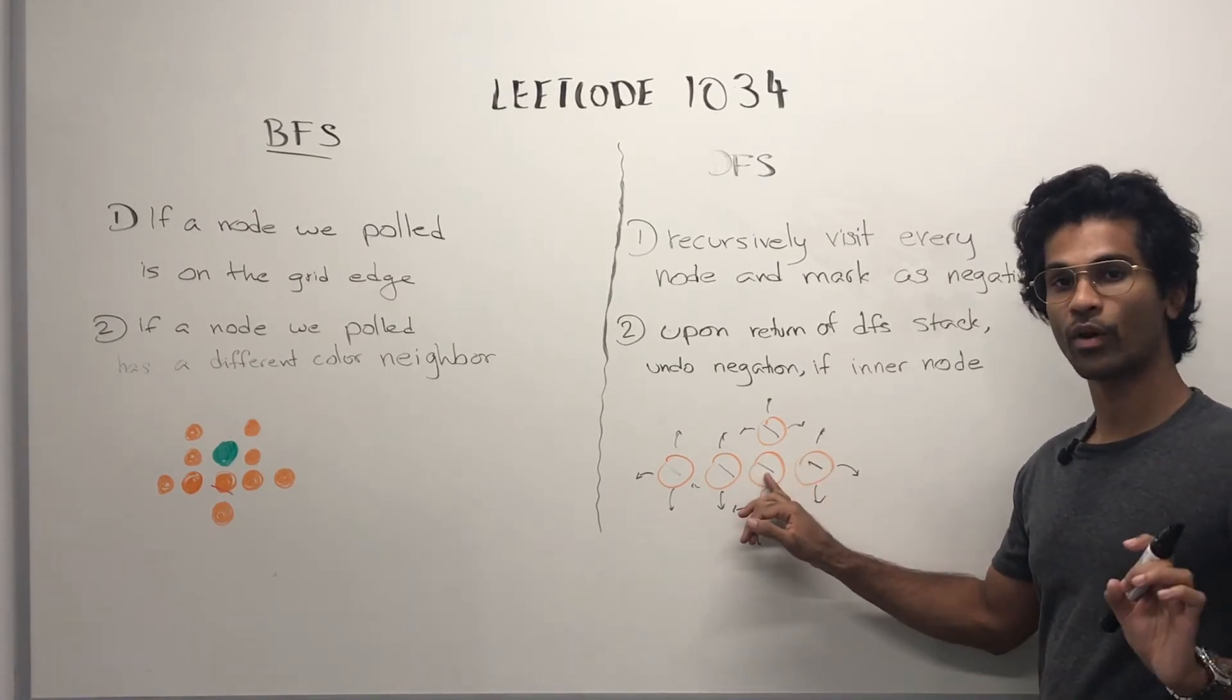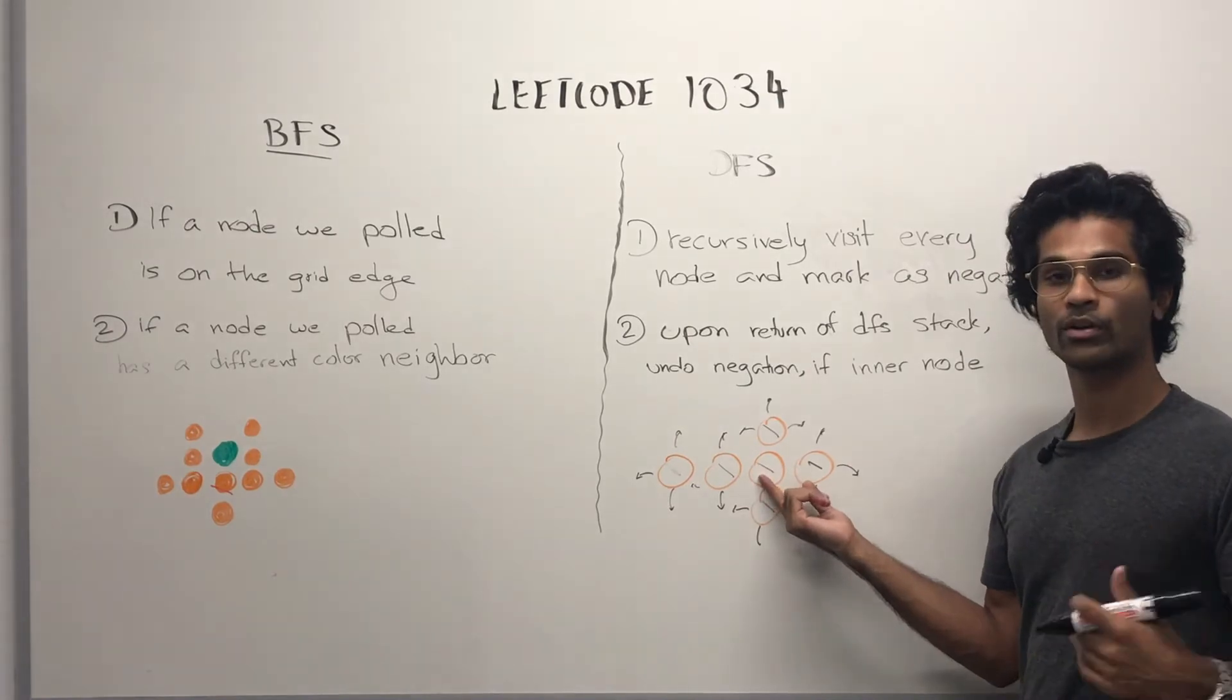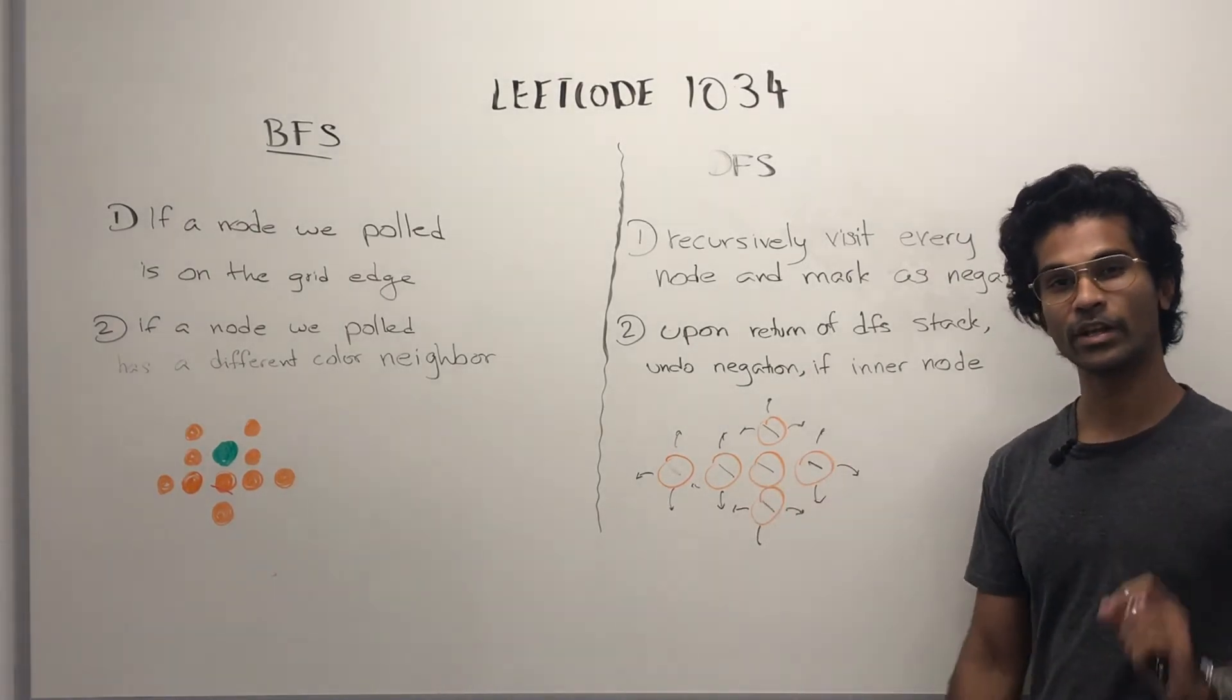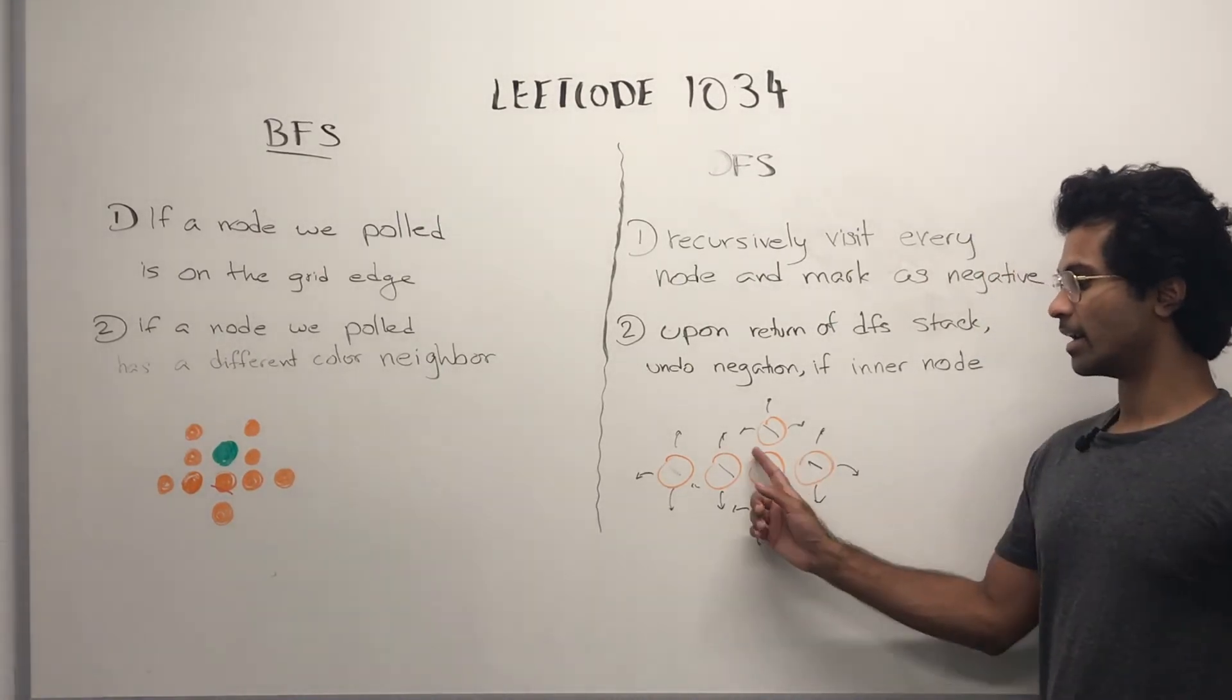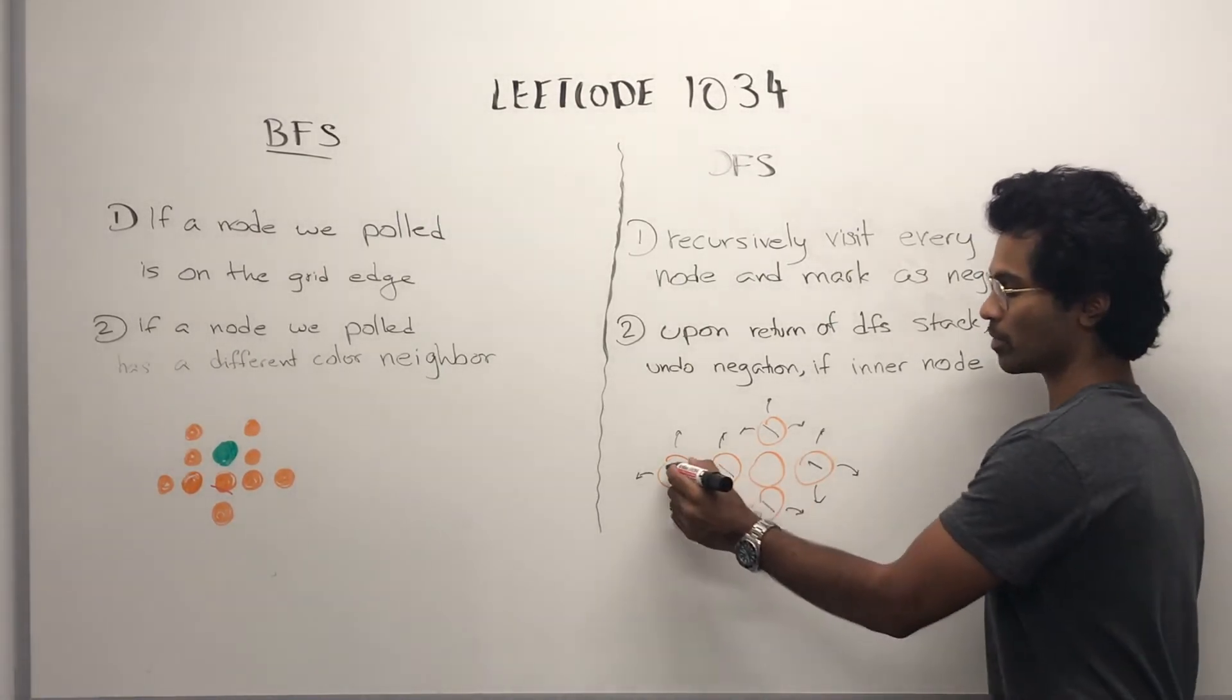So, at this point, this one is going to give up recursive stack control. And it sees that it's an inner node. So, we're going to undo.